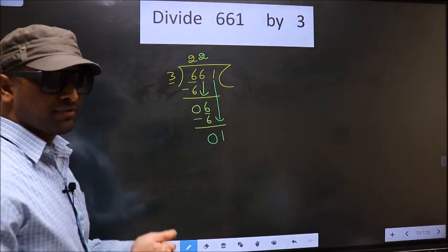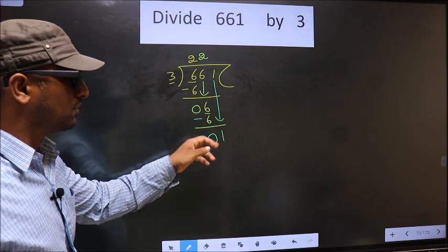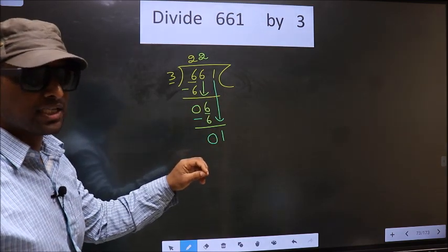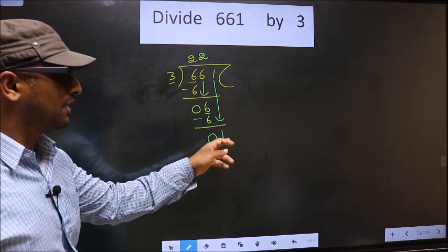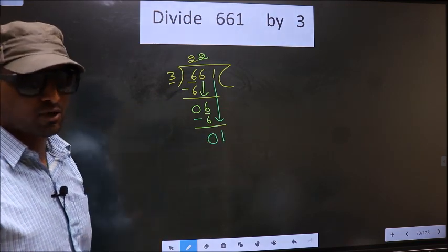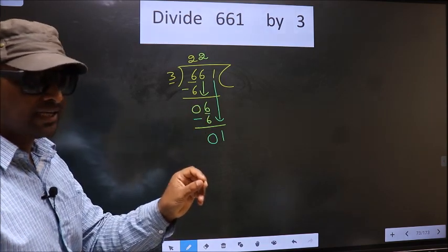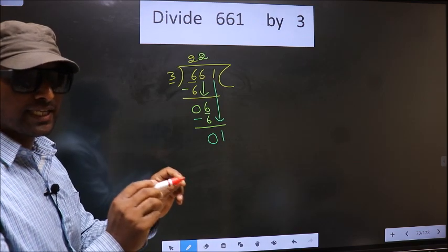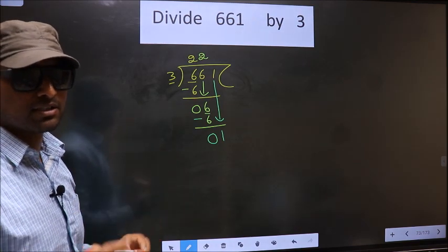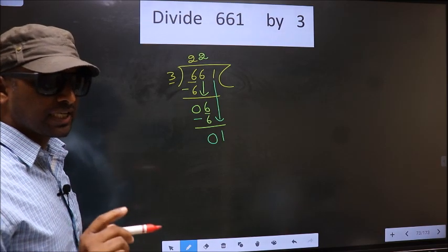Just now you brought the number down, and in the same step you want to put a dot and take 0 here, which is wrong. I repeat, bringing the number down and putting a dot and taking 0 both at the same step, you are not supposed to do.